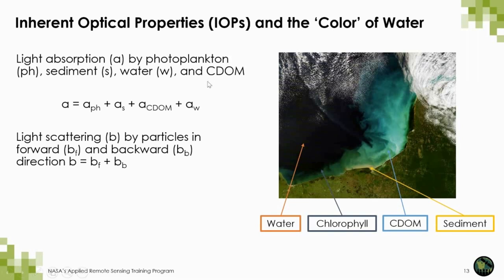We saw this figure last week as a reminder about inherent optical properties and the color of water. When we talk about inherent optical properties, the two main ones are absorption and scattering. Absorption is governed by the presence of different constituents in the water column, such as phytoplankton, sediment, the absorption of water itself, and CDOM — colored dissolved organic matter. In the case of scattering by suspended particles, scattering can be either in the forward or backward direction, depending on the size and form of the particle and other physical properties.